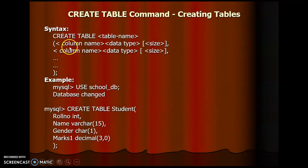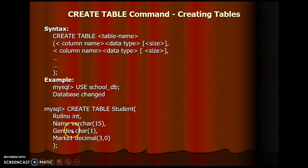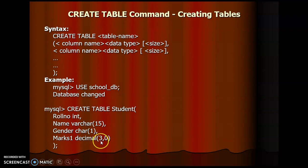Now, the first DDL command is the CREATE TABLE command. The syntax is: CREATE TABLE table_name (column_name data_type size, ...). For example, suppose we have a table 'students' with columns: roll_number, name, gender, and marks. The command would be: CREATE TABLE student (roll_number INT, name VARCHAR(15), gender VARCHAR(10), marks DECIMAL). Keep in mind that the semicolon must be at the end of the query.